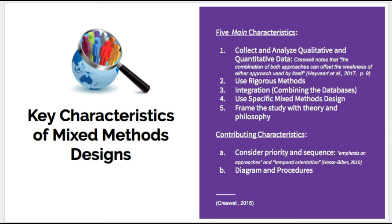Number five, frame the study with philosophy or theory. Using theory is very popular in mixed methods research. Researchers can use social justice theories as part of their research, or as the lens through which they conduct their research. There are also other contributing characteristics. Priority indicates that the research places more emphasis on one type of research over another — this could be because one is preferred by the researcher, or there is a need to understand one before analyzing the other. This is also referred to as emphasis of approaches. Sequence is the use of concurrent — at the same time — or sequential — one after the other — or some combination of the two.